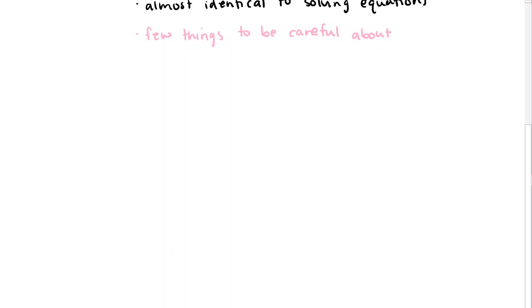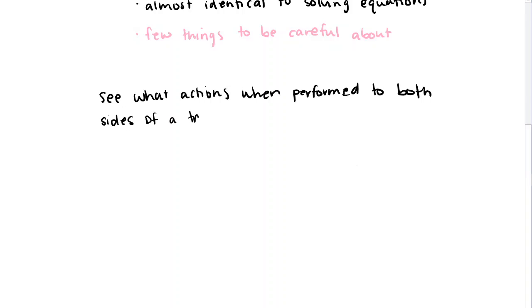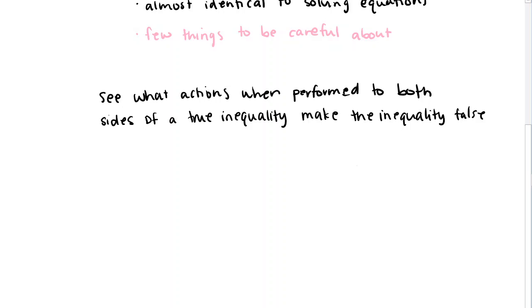The way we're going to bring up this idea is we're going to take an inequality statement that's true and see what sorts of things we expect to be able to do — what actions, when performed to both sides of a true inequality, make the inequality false. These are exactly the actions we have to be a little bit careful about.